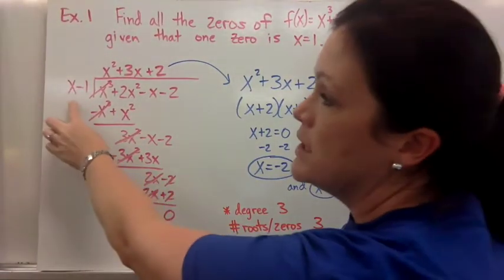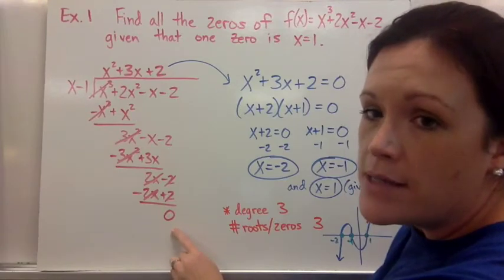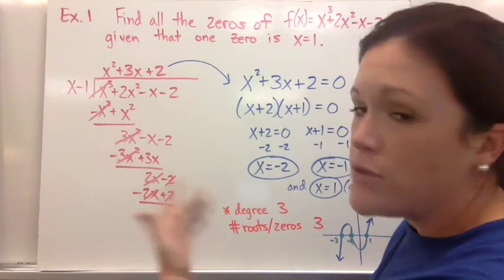x = 1 goes with x - 1. It should have no remainder, because you've been told that that does work out, it's a factor, it goes with the factor theorem.